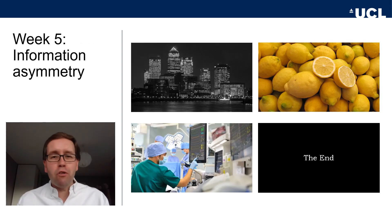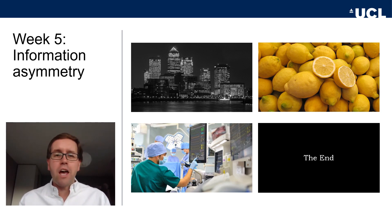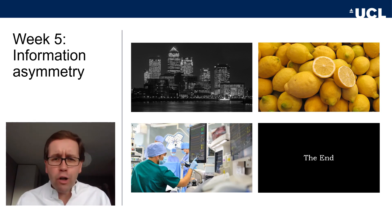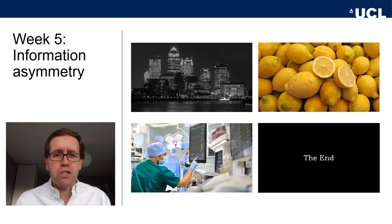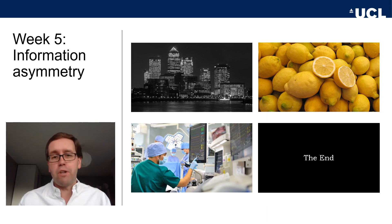We just learned about information asymmetry and moral hazard as a type of principal-agent problem. In the next videos, we will encounter another part of principal-agent problems — what we call adverse selection — and specifically we will learn about the market for lemons. We will then apply this adverse selection idea to the issue of health insurance and healthcare systems. After reading week, my colleague Thomas Kiff takes over.